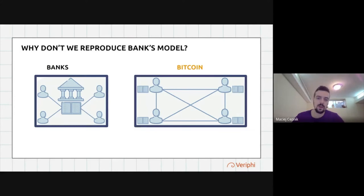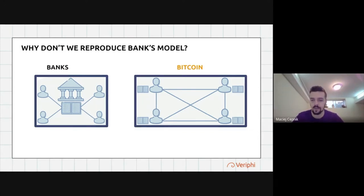This is the first innovation in Bitcoin's technology — for the first time you have a ledger that is distributed and not centralized through a singular party. In a bank system everything is centralized, whereas in Bitcoin it's decentralized.